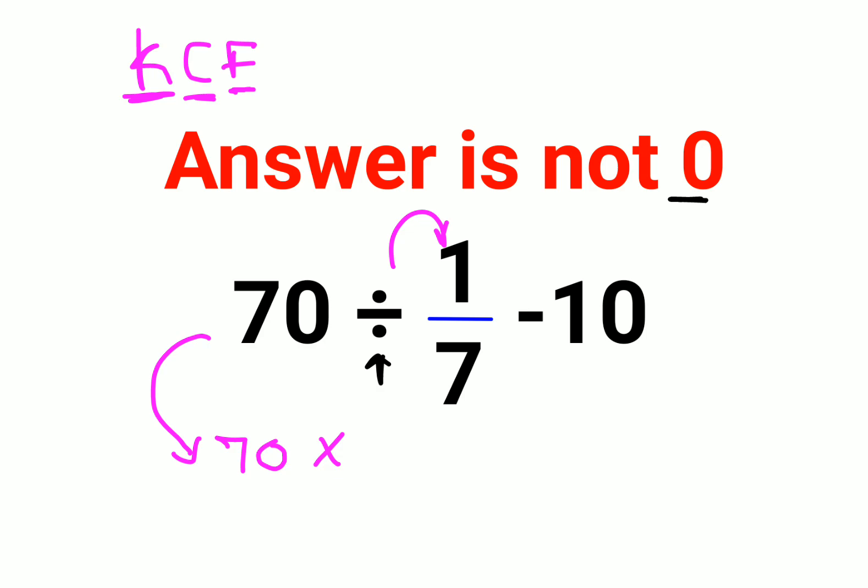So reciprocal of 1 upon 7 is nothing but 7 minus 10. So 70 times 7 gets you 490 minus 10, gets you the answer as 480.